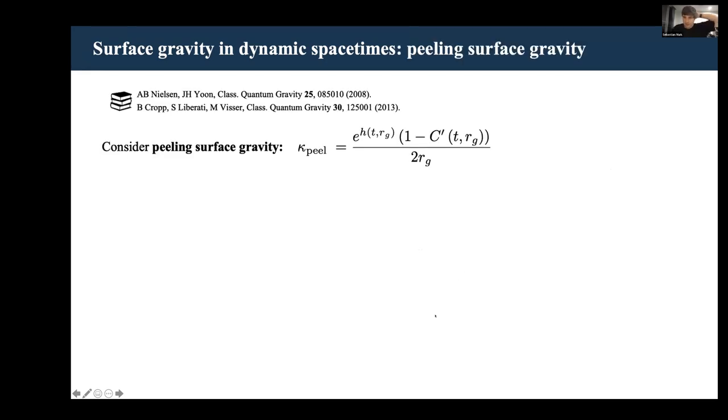To see this, we can start by writing the peeling surface gravity in terms of the metric functions C and H. What you'll find then is that when you do the expansion, and this is true for both k=0 and k=1 solutions, that this quantity will diverge. It's actually quite easy to see.